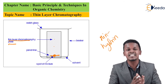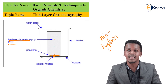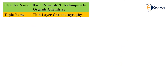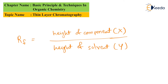This technique is not only used to separate components but also to identify them. This is done by knowing the RF value, known as the Retardation Factor. RF is the ratio of the height of the component raised from the baseline (X) to the height of the solvent raised (Y). Since every component has its own RF value, measuring it with a scale allows us to identify the possible component in the mixture.